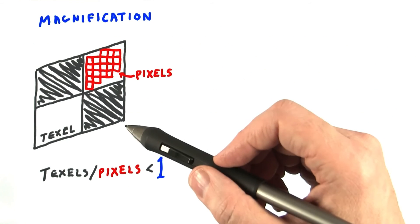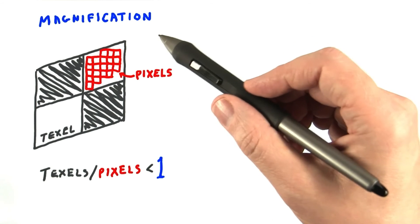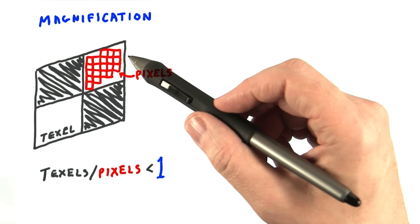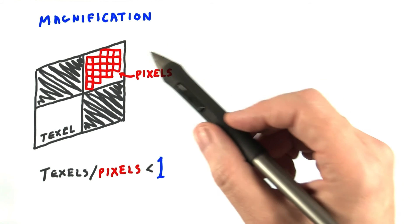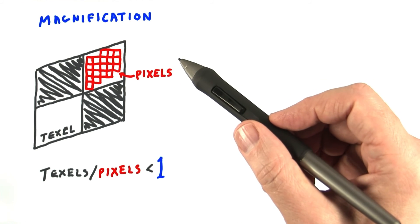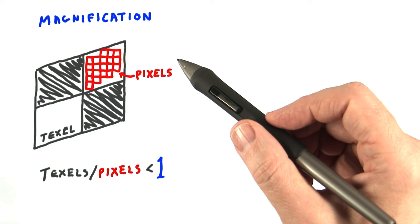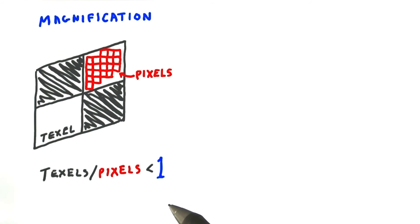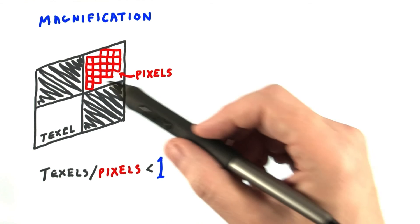Here's our original 2 by 2 texture. When we have a situation where a texel covers more than a pixel, this is called magnification. When magnification is occurring, the texture's mag filter is used. Another way to say it is that if the number of texels divided by the number of pixels is less than 1, magnification is happening. You're magnifying the texture.